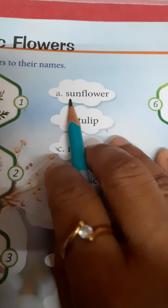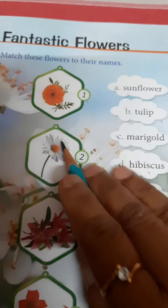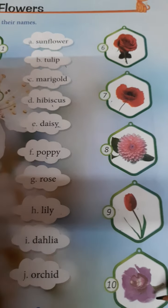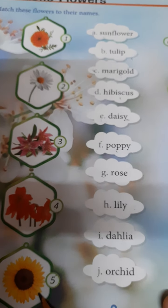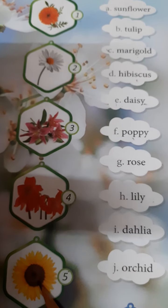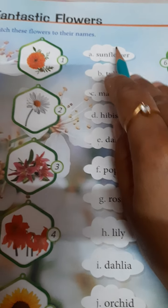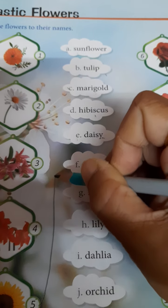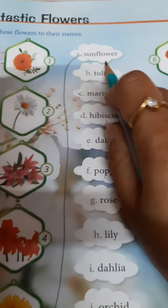First is sunflower. So children, do you know which one is sunflower? This is sunflower. You match these flowers to their names.